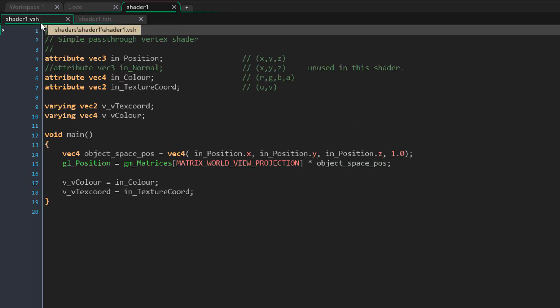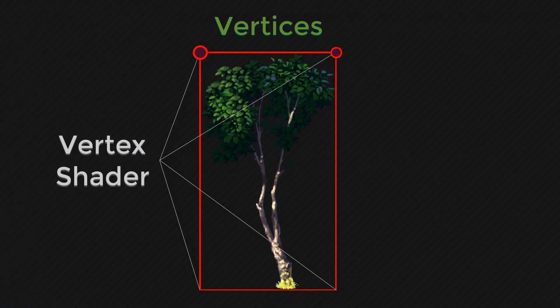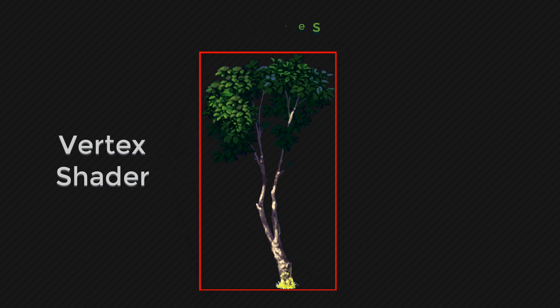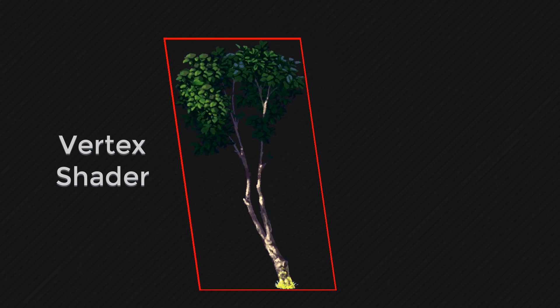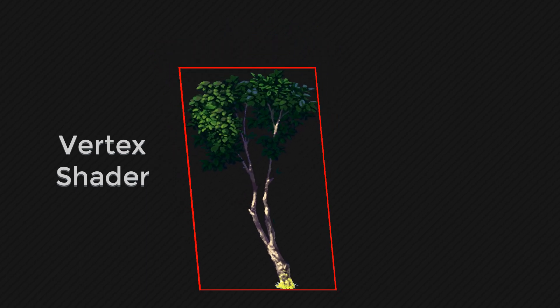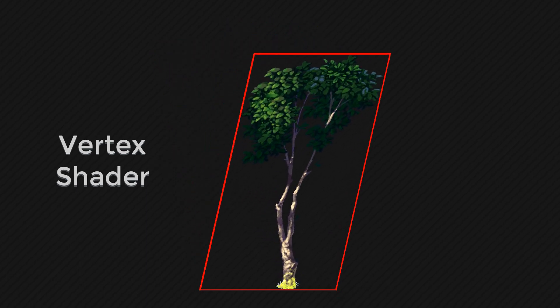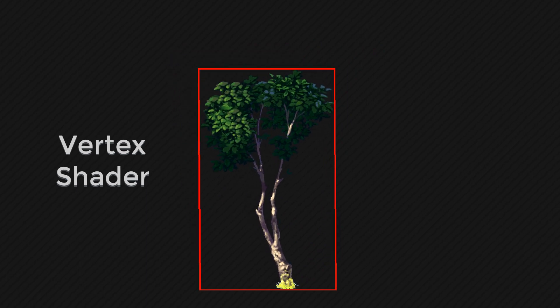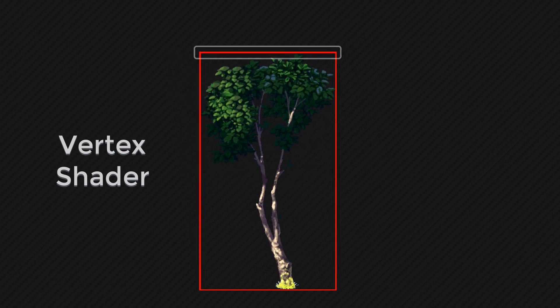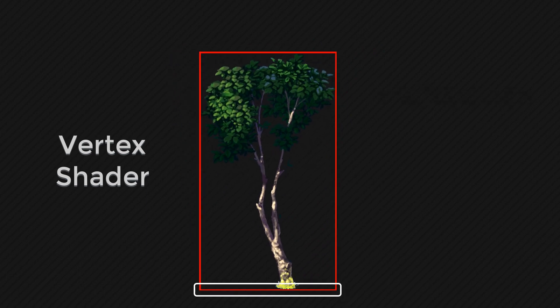The vertex shader is what operates on each vertex or corner of the rectangle. So using a vertex shader we can move the top vertices of an image to create a parallax effect. We only need to move the vertices at the top — the ones at the bottom will stay where they are.